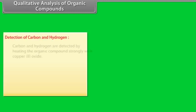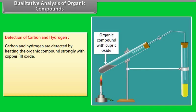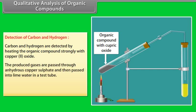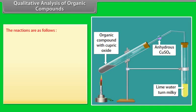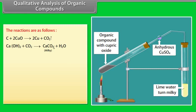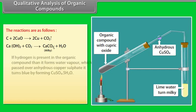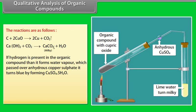Qualitative analysis of organic compounds — Detection of carbon and hydrogen: Carbon and hydrogen are detected by heating the organic compound strongly with copper(II) oxide. The produced gases are passed through anhydrous copper sulphate and then into lime water. If carbon is present, it forms carbon dioxide which turns the lime water milky. The reaction: carbon in organic compound + copper(II) oxide → copper + carbon dioxide; the produced CO₂ reacts with calcium hydroxide, turning it milky.